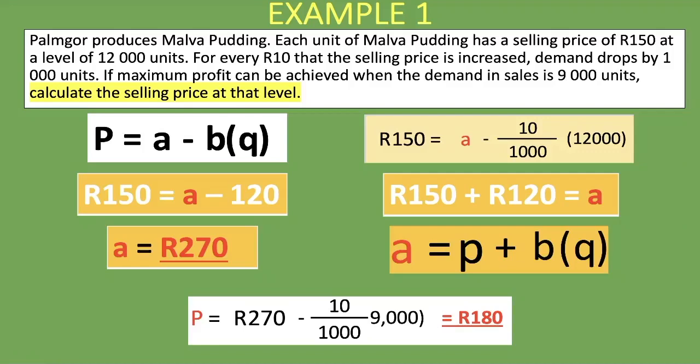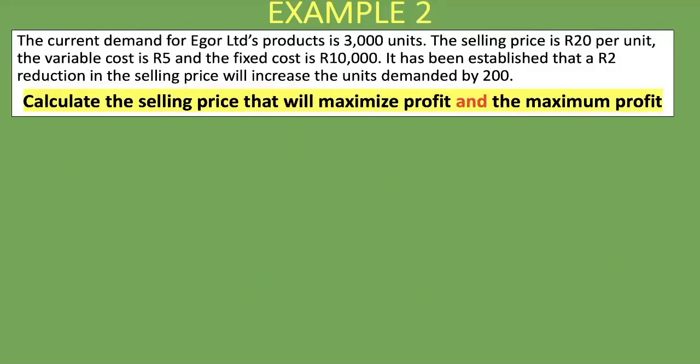For our second example: the current demand for Ego Limited's products is 3,000 units, the selling price is 20 rand per unit, variable cost is 5 rand, and fixed cost is 10,000 rand. It has been established that a 2 rand reduction in selling price will increase units demanded by 200. We are asked to calculate the selling price that will maximize profit and the maximum profit.